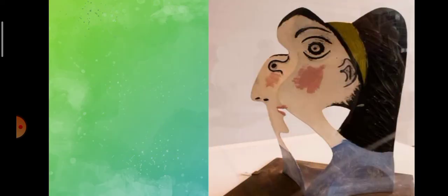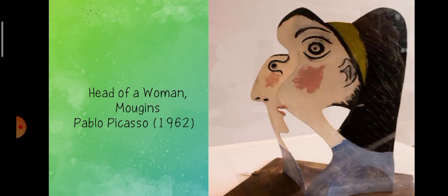Let's go back to an example. Here is a painting by Pablo Picasso titled 'Head of a Woman.' Looking at it, would you say it is representational, abstract, or non-representational? The answer is: this is abstract.